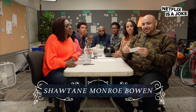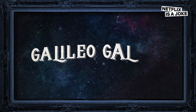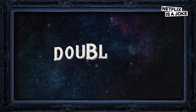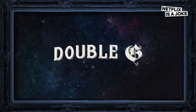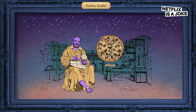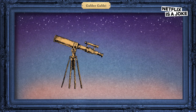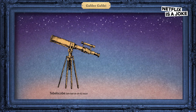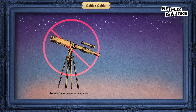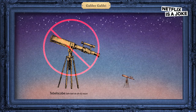Galileo Galilei. Everyone knows about Galileo Galilei, or as we like to call him, double G. Everyone knows that he was the first person to create pizza. Back in ancient times, they didn't have telescopes — which is the cousin to the telescope — so they would use pizza.